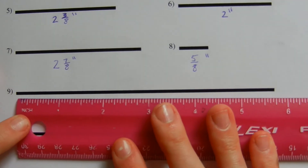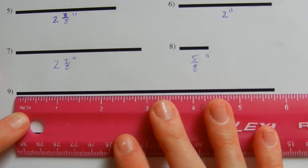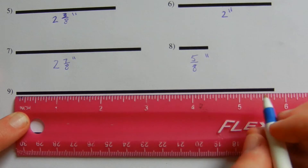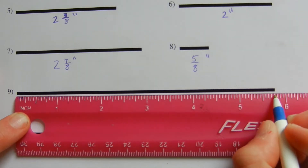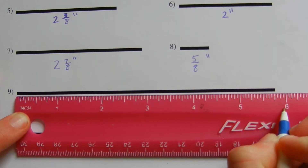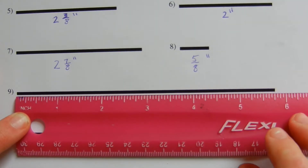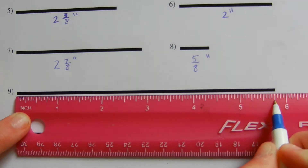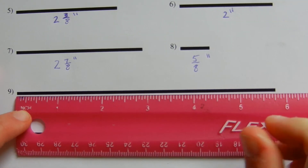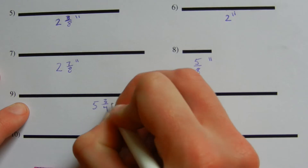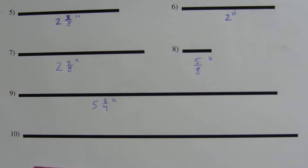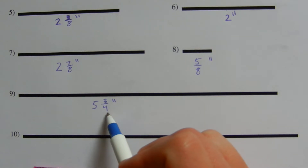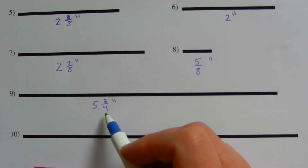I'm going to zoom out for the following lines so you can see them in the entire frame. Lining our ruler up with number nine, you can see here's five inches — the end of the line falls between five and six, so it's going to be five inches and some fraction. That fraction is three quarters, so this is five and three quarters of an inch. If counting by eighths, three quarters would have been six eighths, which simplifies to three quarters — so always simplify your fractions.